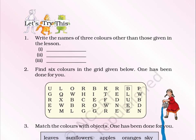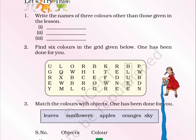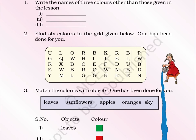Page No. 58. Let's try this. 1. Write the names of three colors other than those given in the lesson: 1. ___, 2. ___, 3. ___. 2. Find six colors in the grid given below. One has been done for you. Here is a box full of alphabets — connect them to form color words. One has been done for you: B, L, U, E — Blue.